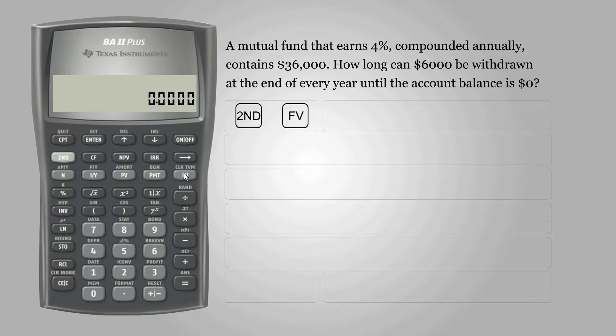We need to set the number of compounding periods per year, or CY, and number of payments per year, PY. So press 2nd, IY, and set the PY to 1, since the question asks for every year, and enter.